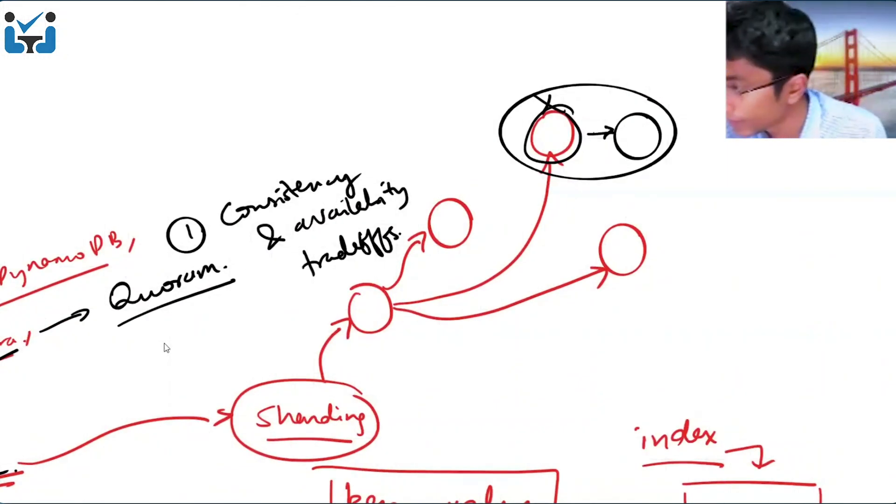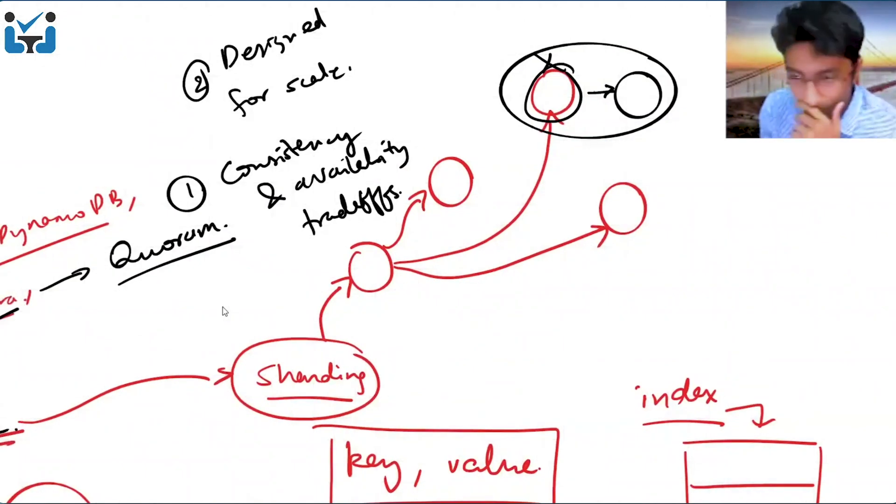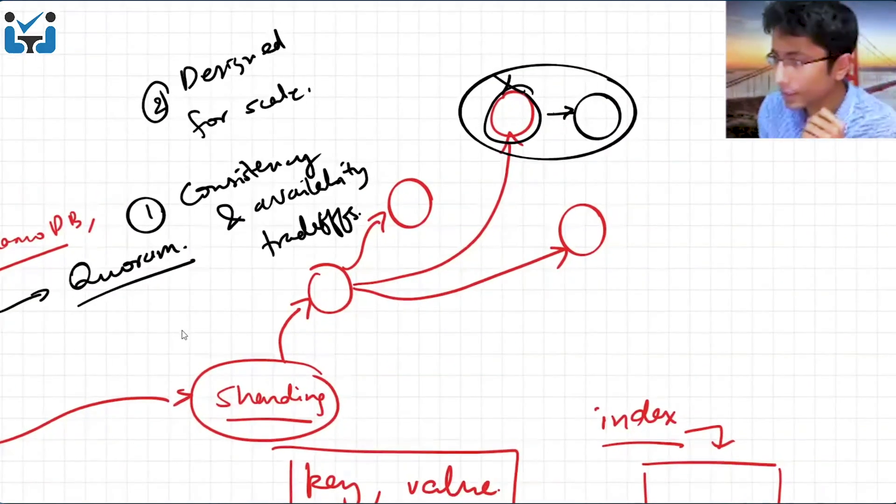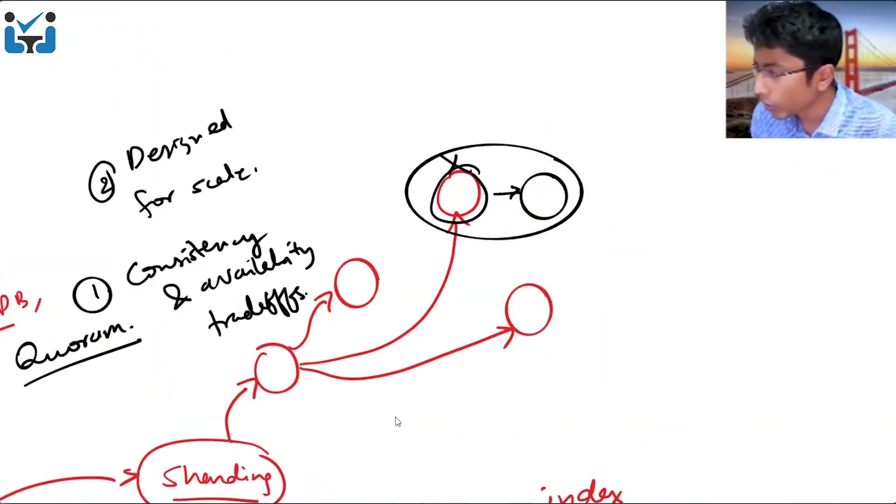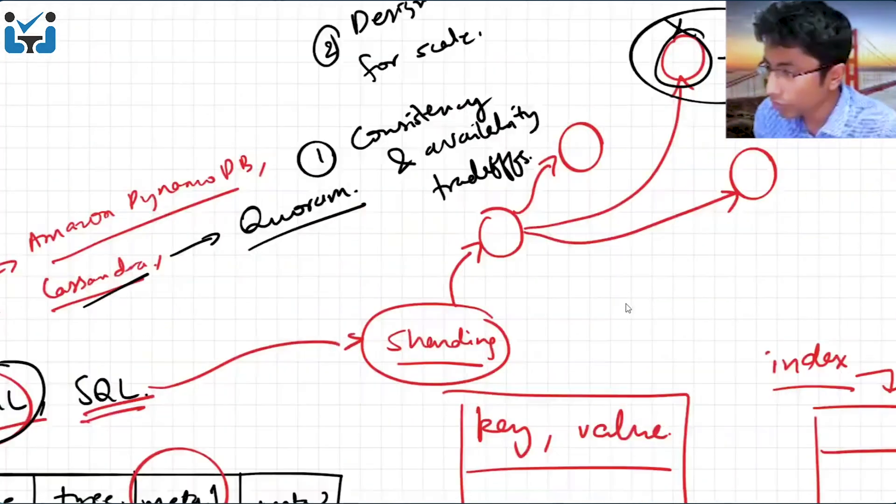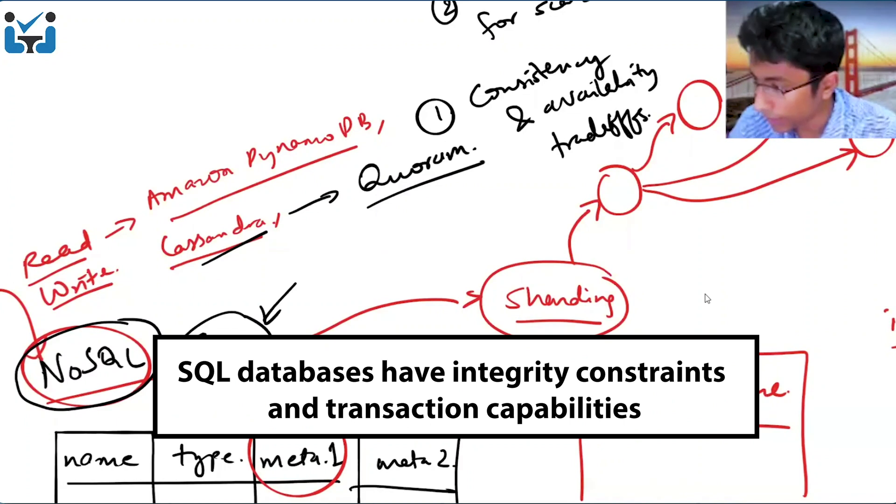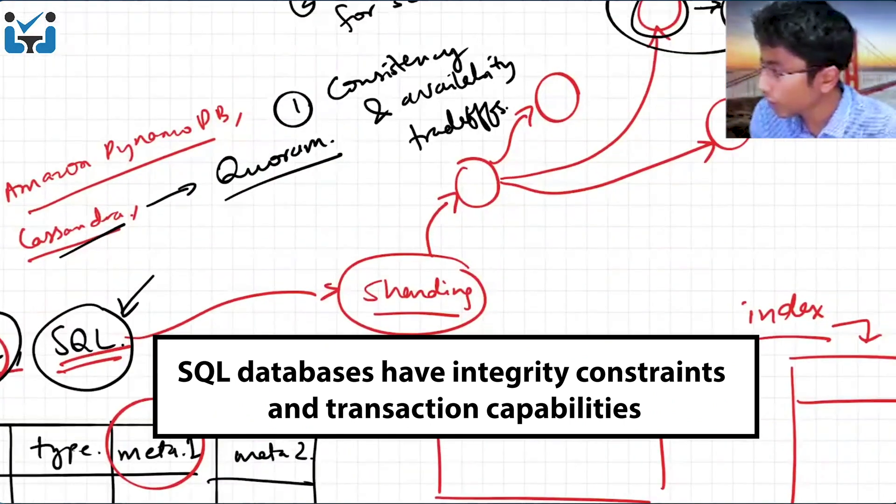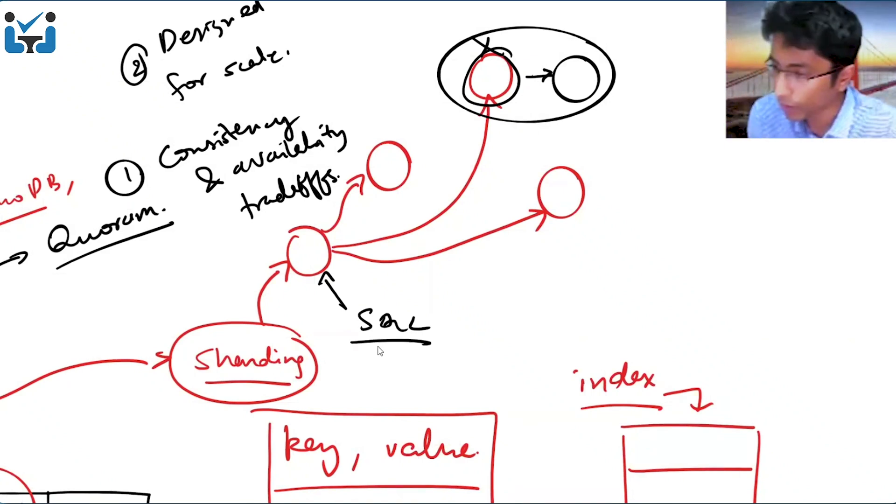Point number two is that it is designed for scale. But there are certain drawbacks also. One of the things is NoSQL for small companies is usually more expensive than SQL. The second thing is, if you don't need it, then SQL is easier to handle. Basically finding SQL queries on a MySQL or a PostgreSQL database is a simple thing. It's well-documented and everything.